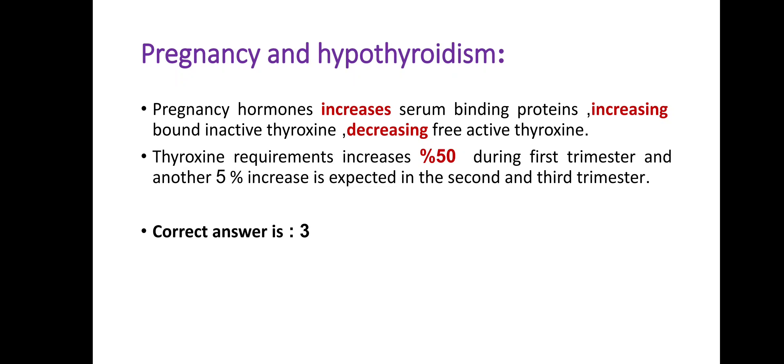The bound form of thyroxine is inactive and not causing any effect. But the free active part is free, not bound, and it is active. So when you increase the plasma proteins, you increase the bound inactive thyroxine, and the free active part decreases. Therefore, the thyroxine requirement is increased during pregnancy. Interestingly, the thyroxine requirement increases by 50% during the first trimester, and another 5% increase is expected in the second and third trimesters.